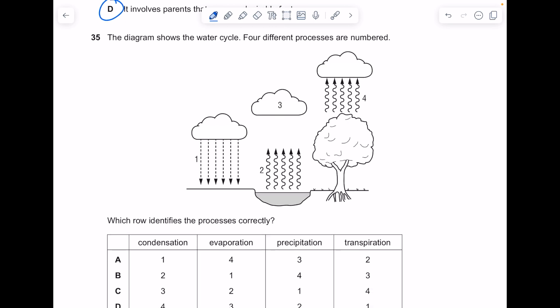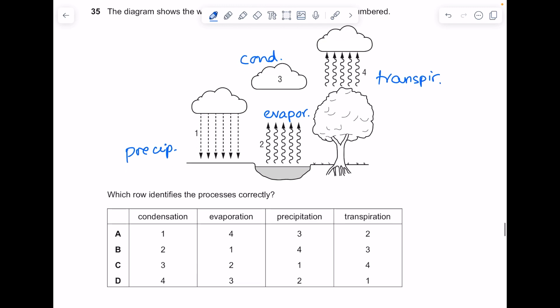The diagram shows the water cycle. Four different processes are numbered. Which row identifies the processes correctly? Number two is evaporation because that lake's evaporating. Number one is precipitation because it's raining. Number four is the trees transpiring and number three is clouds forming, so condensation. We're looking for precipitation, evaporation, condensation, transpiration. The answer here is C.